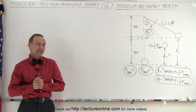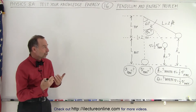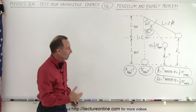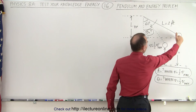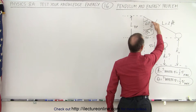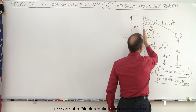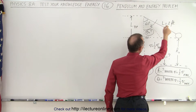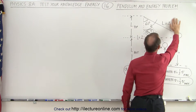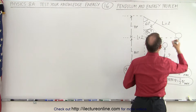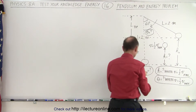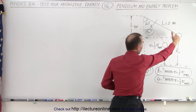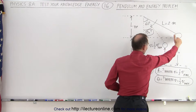Welcome to our lecture online. Next we have an interesting pendulum problem to challenge us. We have a pendulum that starts out at an angle of 60 degrees away from the vertical. The length of the pendulum is 2 meters. We're going to allow the pendulum to swing to the bottom.